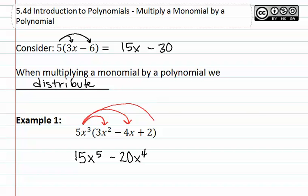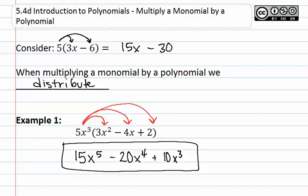We do the last distribution and we see that it is 5 times 2 or a positive 10x to the third. No more can be combined, so this is our final answer.